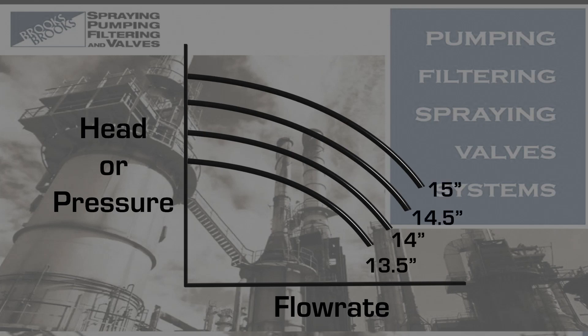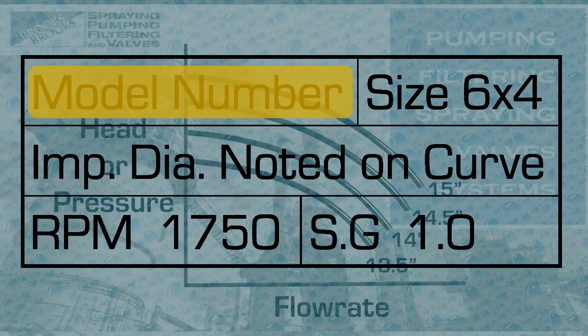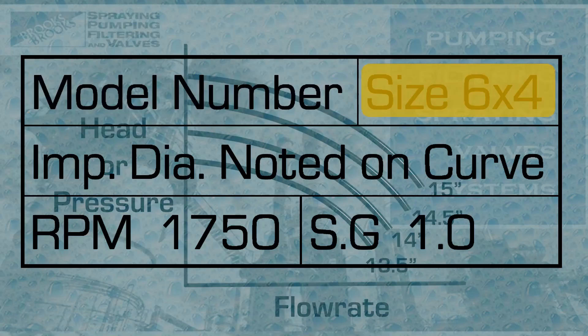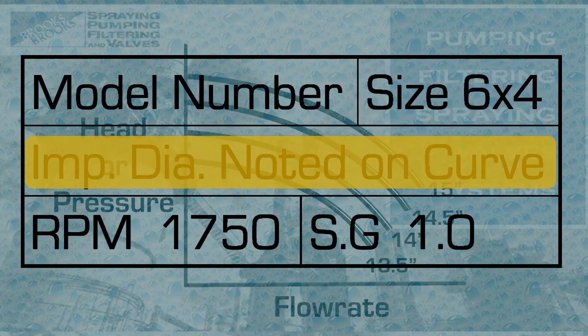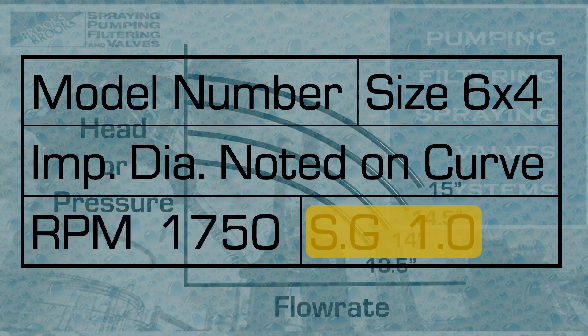There are several important features on the sheet. The data block notes the pump model, suction and discharge port sizes, impeller diameter, pump speed in RPM, and sometimes the specific gravity of the liquid that the pump was tested on, which is usually 1.0, corresponding to water.